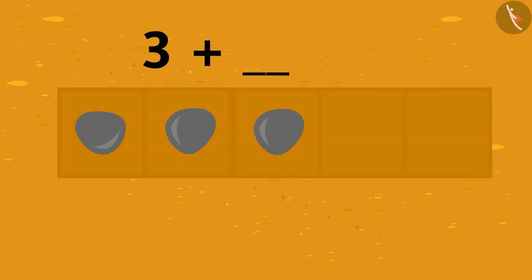In other words, what will we add to 3 to make it 5? Let's place 1 stone each in the empty frames until all 5 frames have 1 stone each.